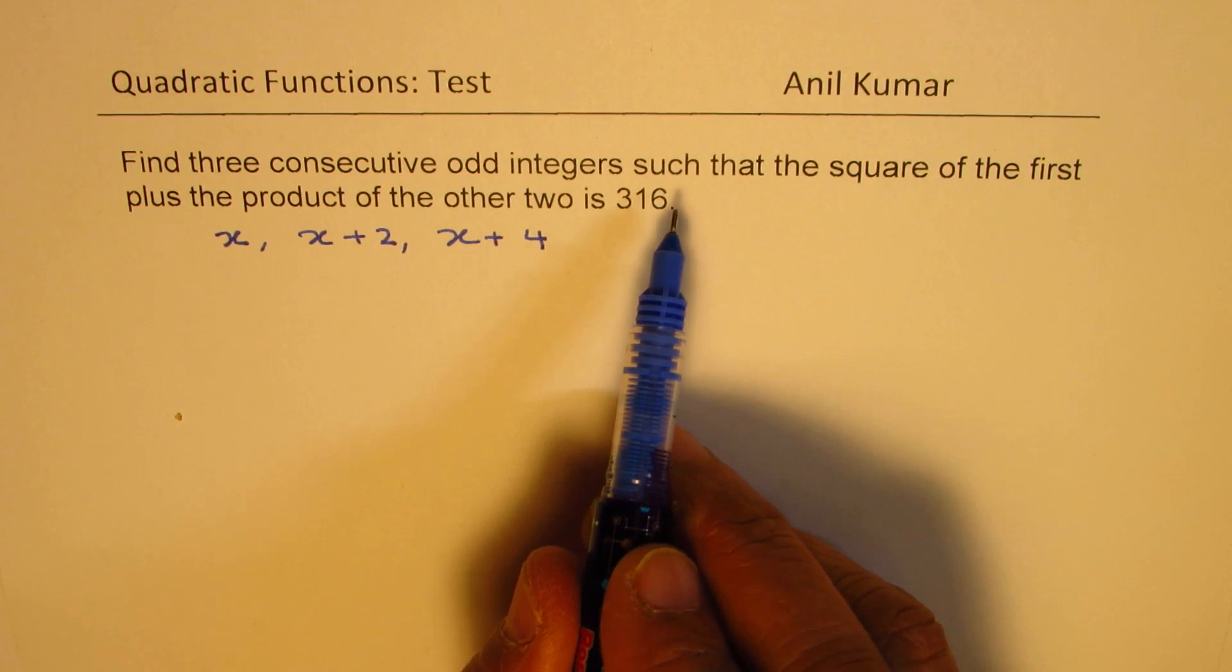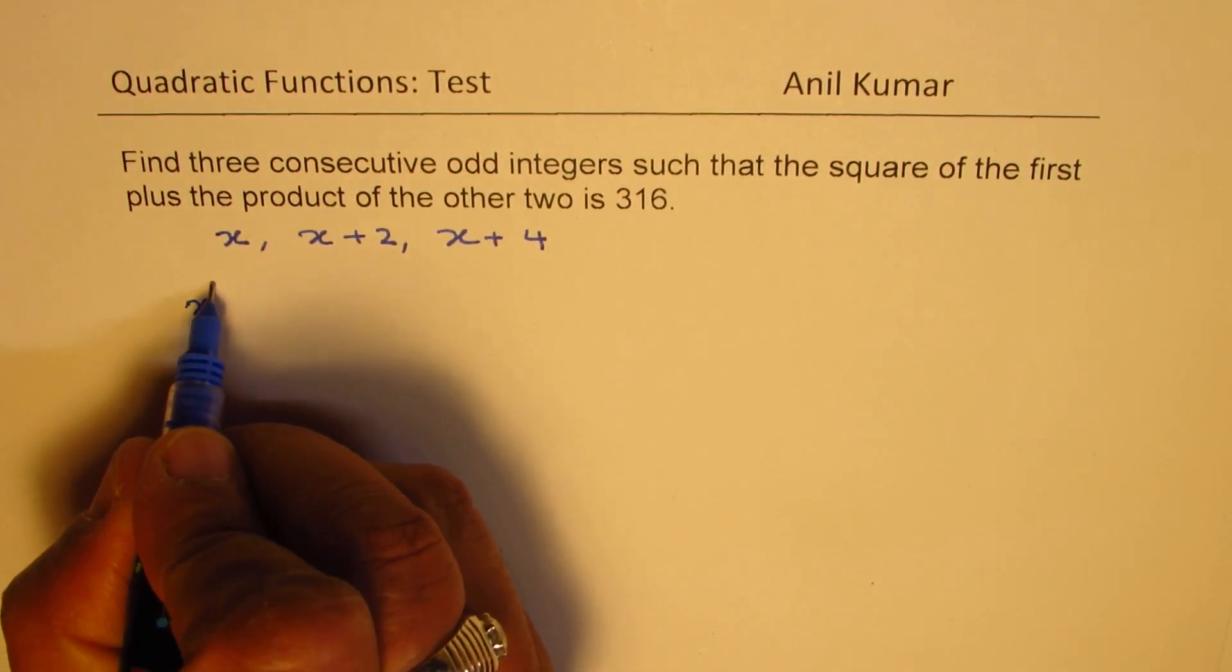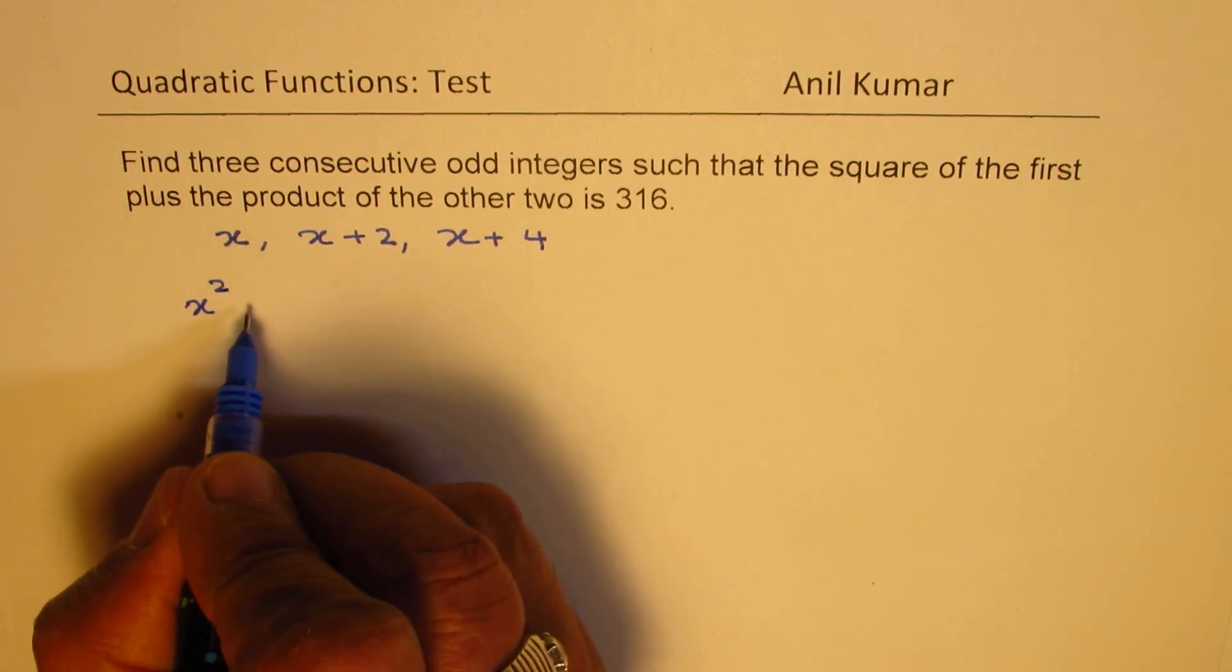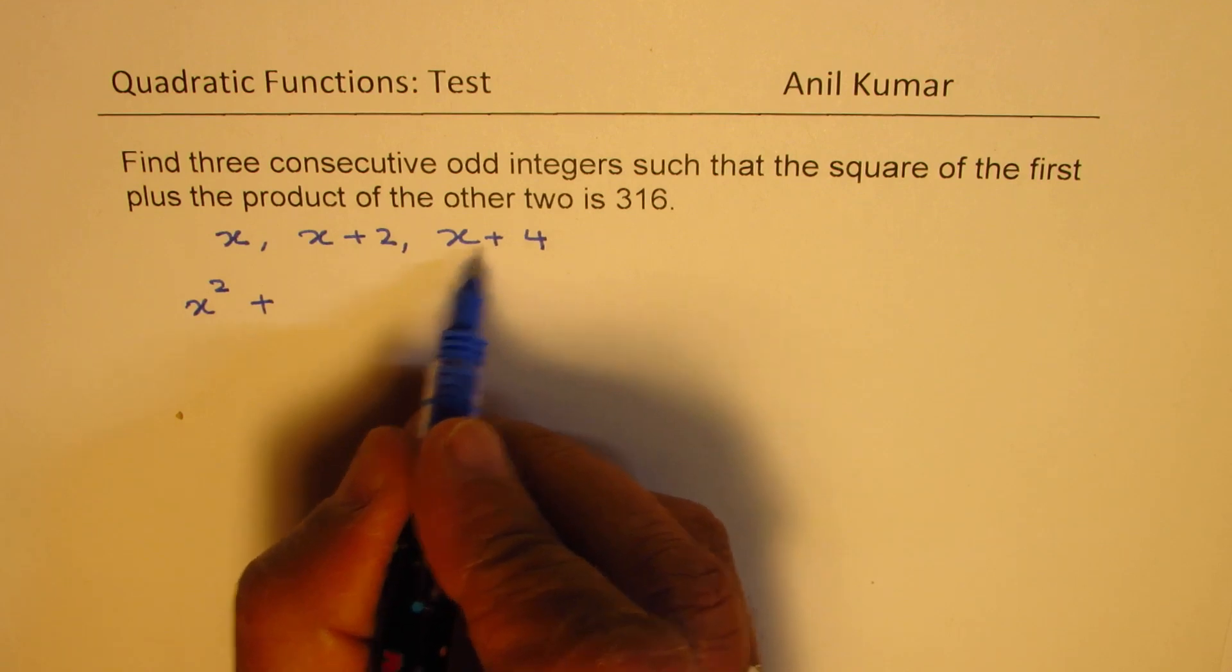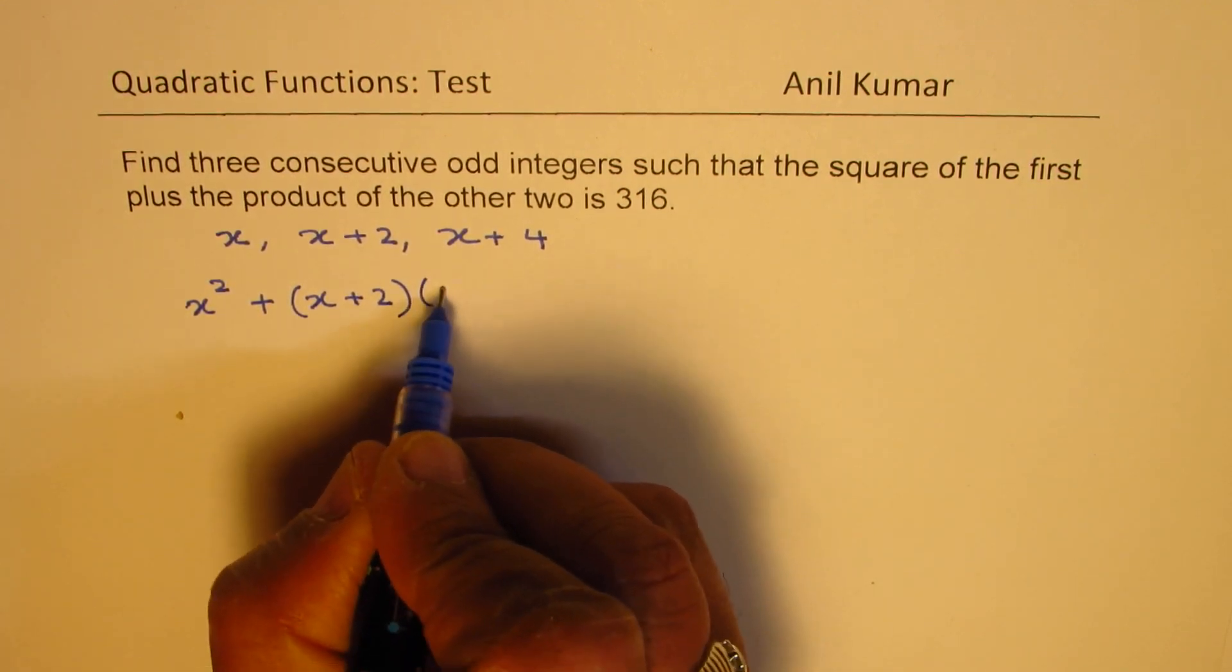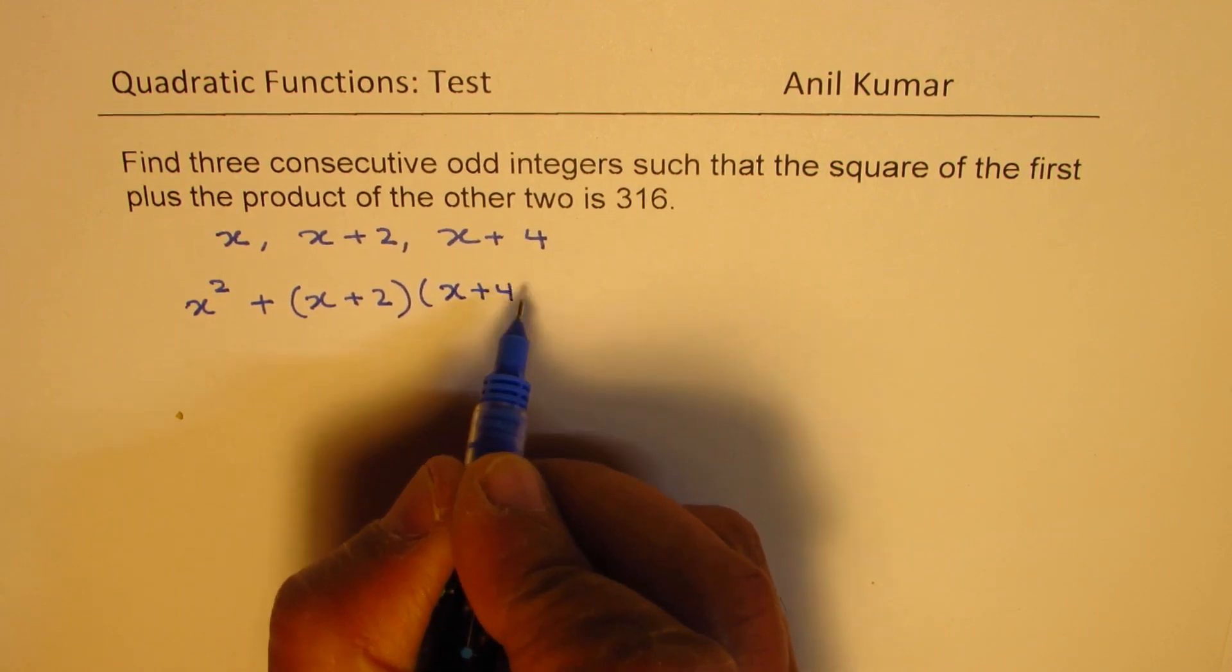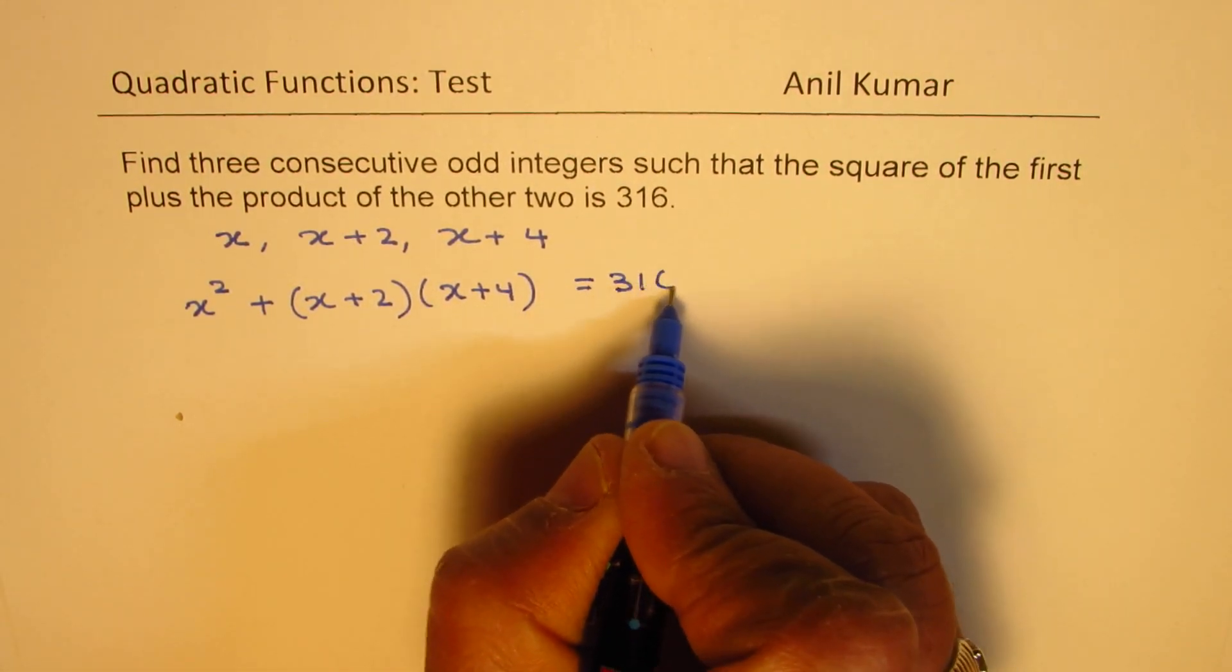The condition is such that square of the first—first one is x, so we will square this. Square of the first plus product of the other two, that means multiply these two: x plus 2 times x plus 4 should give you 316. So that is how you can form the equation.